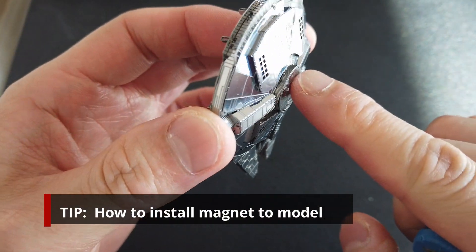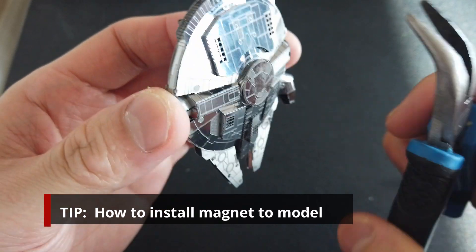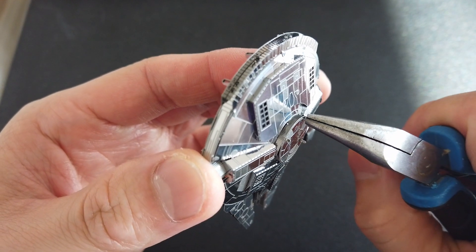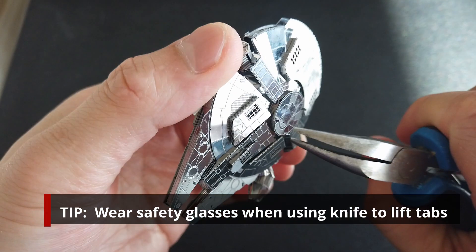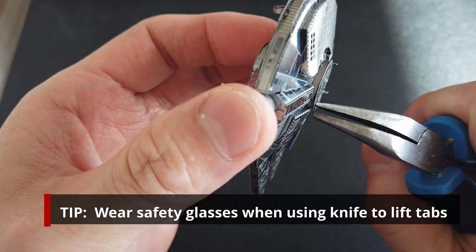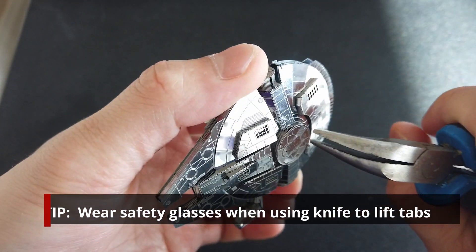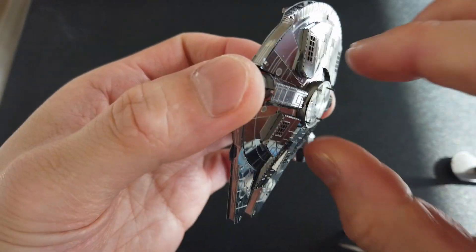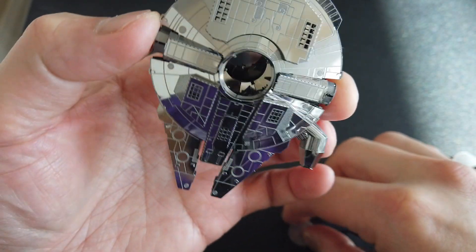Use an Xacto knife and carefully lift each of these tabs, make sure not to cut yourself. And then you can straighten these tabs up. And then you should be able to remove this panel.